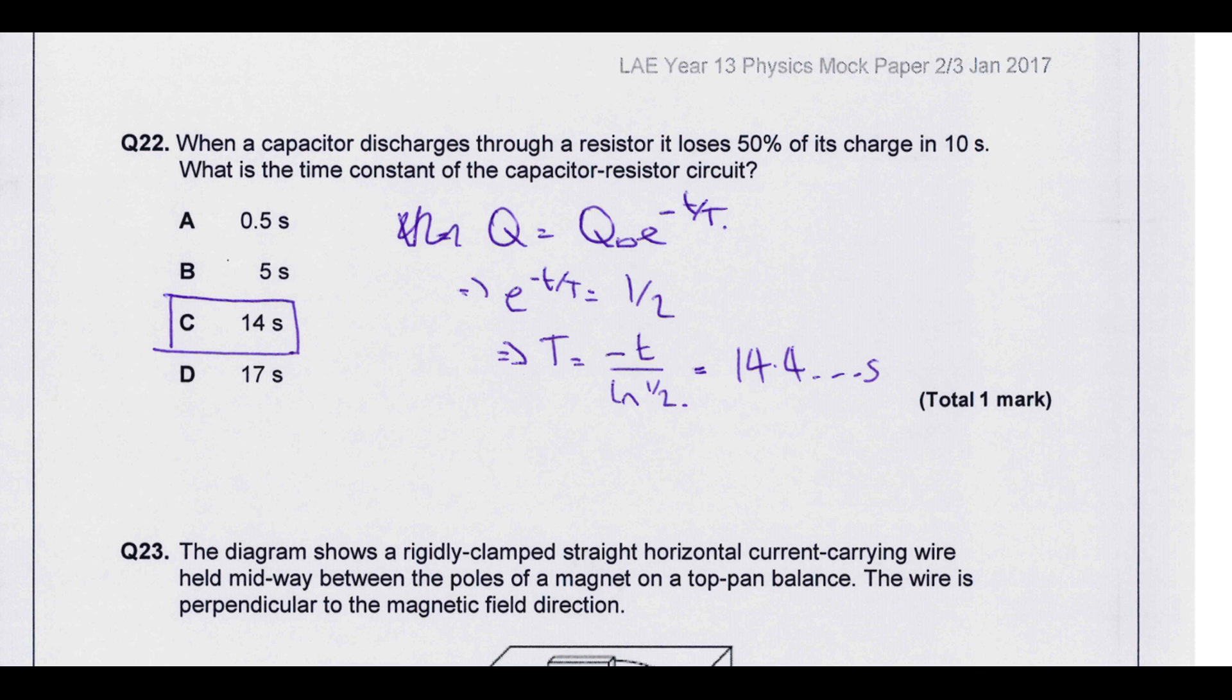A one microfarad capacitor is charged by means of a constant current of 10 microamps for 20 seconds. What is the energy finally stored in the capacitor? We're going to end up using this equation here. E equals half Q squared over C. We need to work out how much charge is stored, which is why we've got this stage here. So we can work out the total charge, put it into that equation and we end up with C as the answer here.